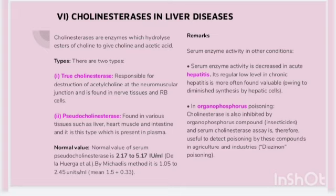The normal value of serum pseudocholinesterase is 2.17 to 5.17 international units, and by Michaelis method it is 1.05 to 2.45 units per mL. Serum enzyme activity is decreased in acute hepatitis, and its regularly low level in chronic hepatitis is most often found valuable owing to diminished synthesis by hepatic cells. In organophosphorus poisoning, cholinesterase is inhibited by organophosphorus compounds like insecticides, so the serum cholinesterase assay is useful to detect poisoning by these compounds in agriculture and industries — for example, diazinon poisoning.